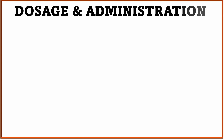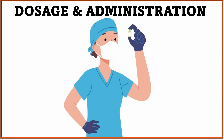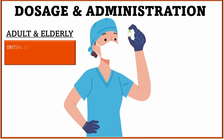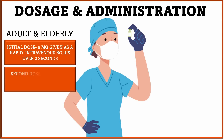Coming to the dosage and administration: in adults, elderly, and children weighing more than 50 kg, an initial dose of 6 mg is given rapidly. If PSVT is not reverted, a second dose of 12 mg Adenosine is given.